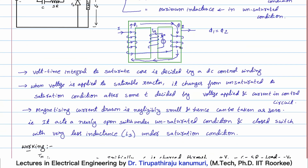The basic characteristic of this saturable reactor is that the voltage-time integral - that is, voltage multiplied by time duration - is fixed and decided by the current passing in the control circuit, mainly the DC control winding. If you apply more voltage, it will go from non-saturation to saturation in less time; if you apply less voltage, it will take more time. The magnetizing current drawn is negligibly small because the control winding already takes care of the flux required.